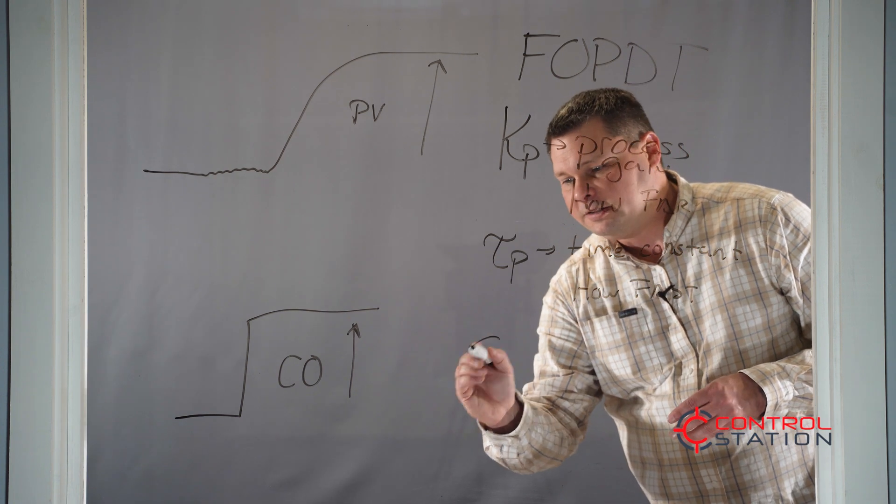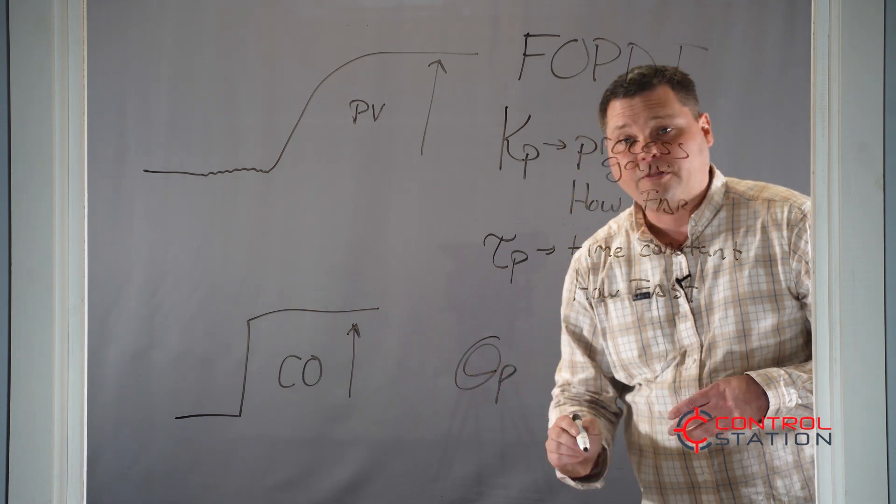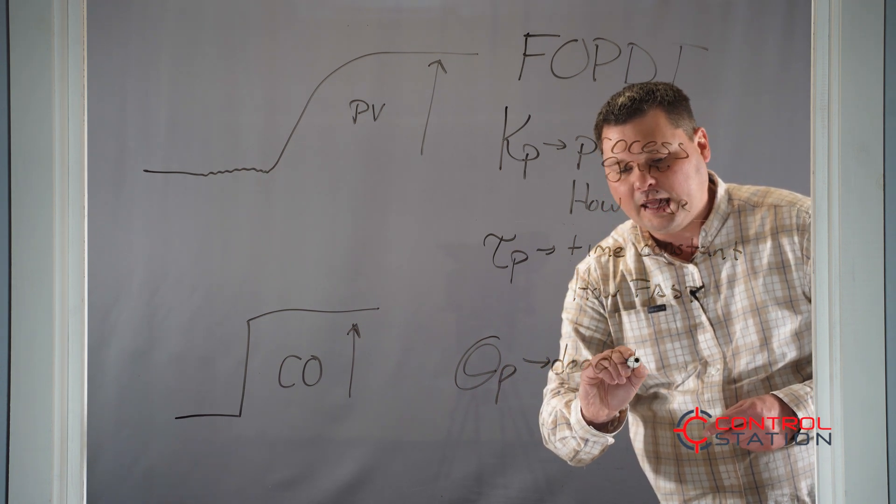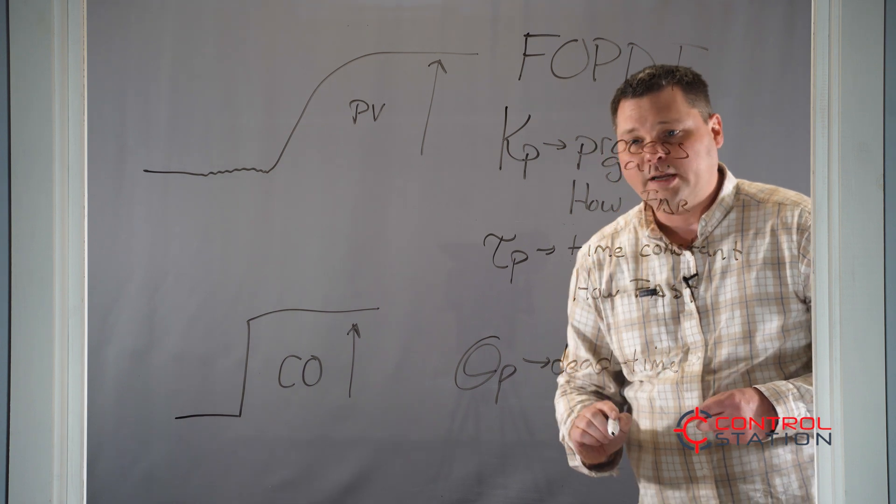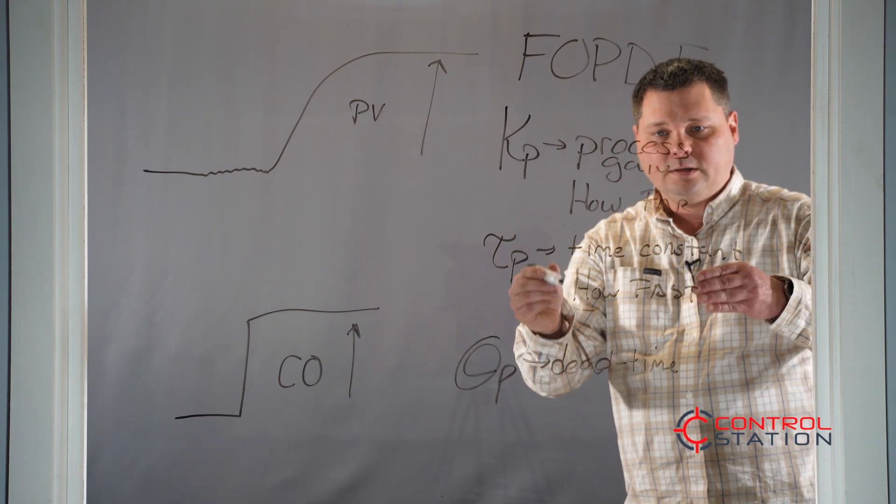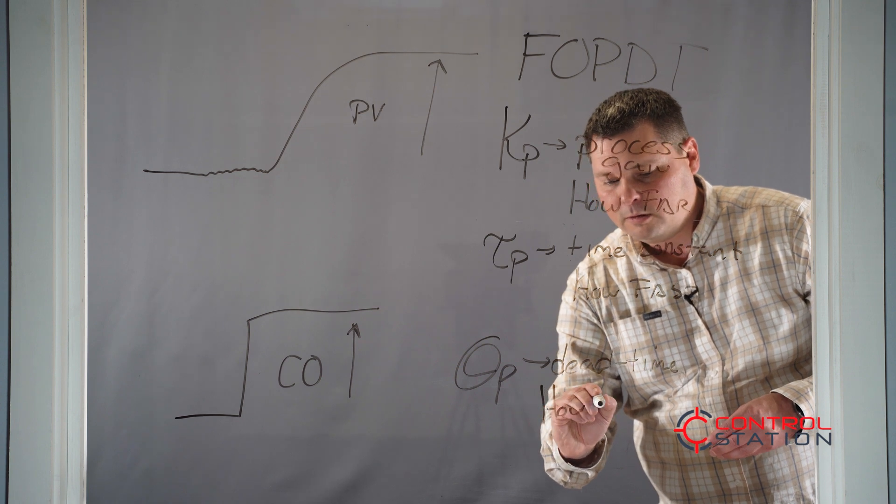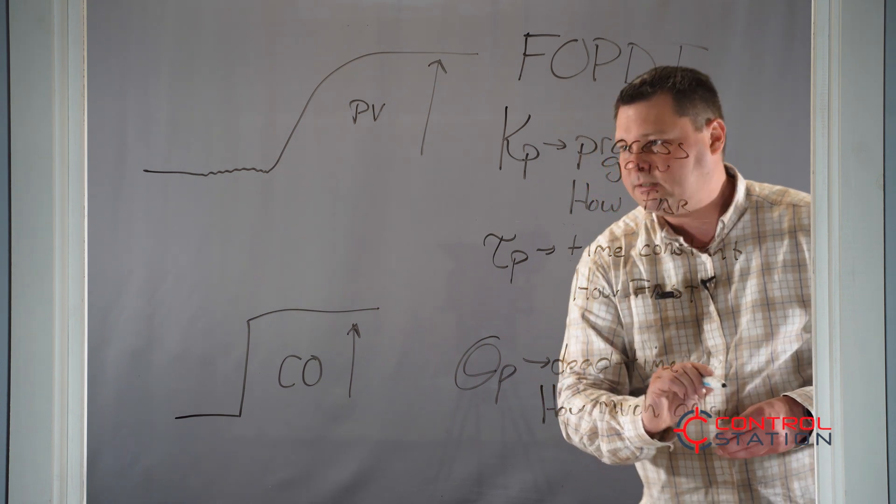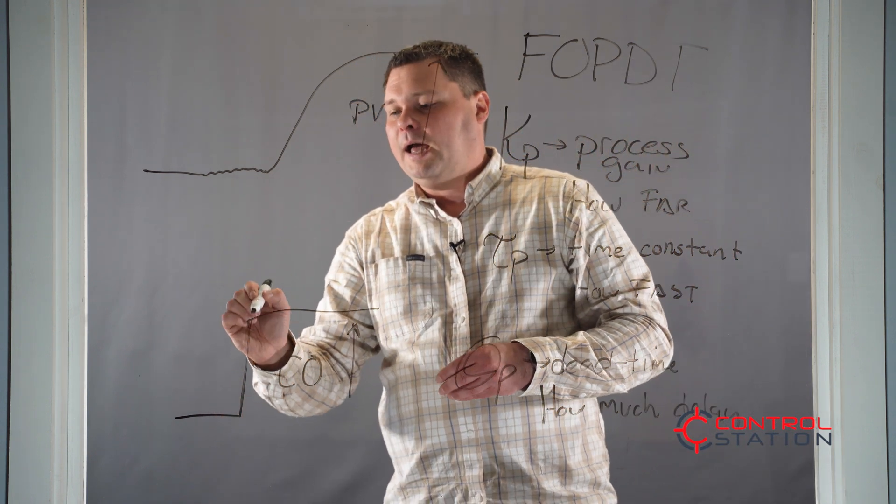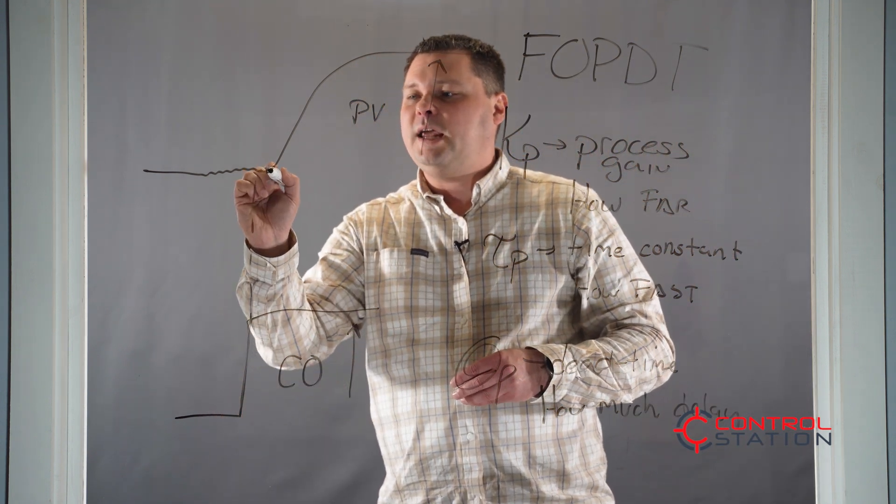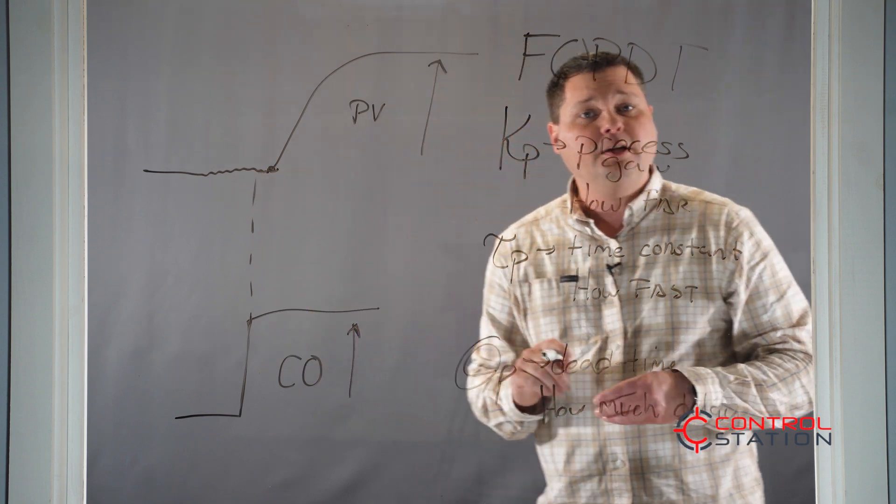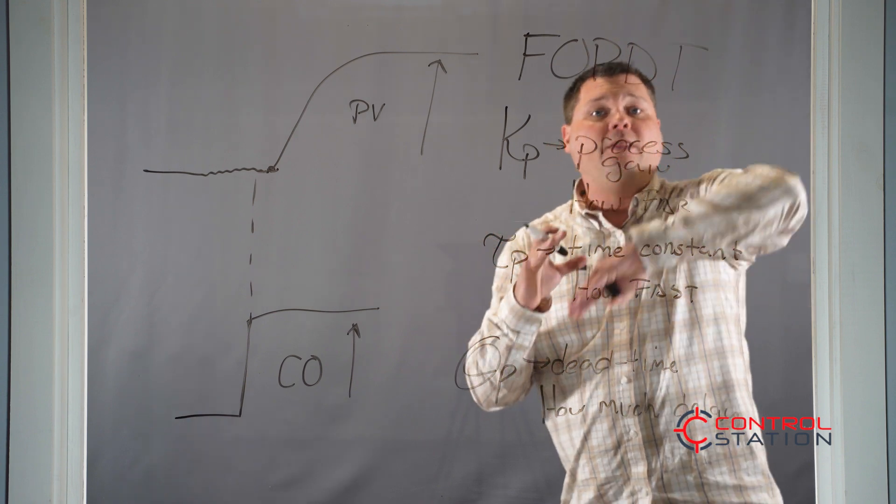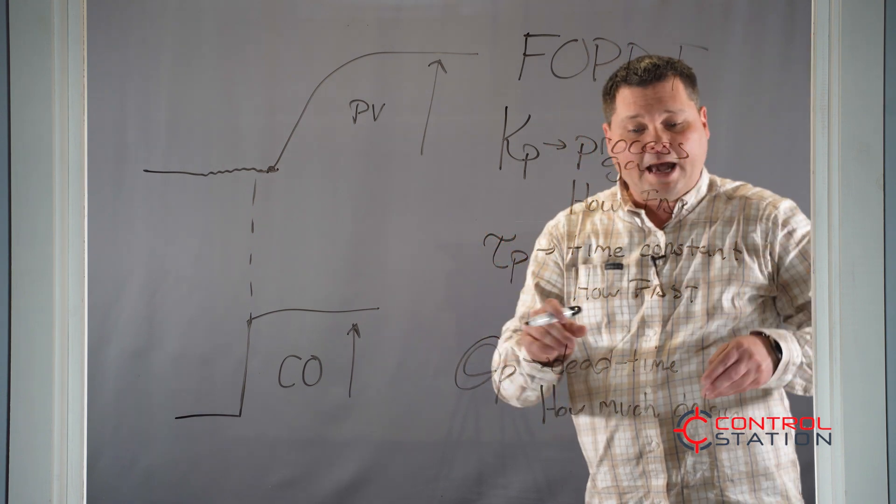The next parameter is our dead time or theta P. Our dead time is related to the delay of the system. So how fast, how far, how much delay. That's going to tell us when I make a change to my valve, how long does it take till something actually starts to happen? You open the control valve, nothing happened, nothing happened, then the flow responded, then the temperature responded. That's going to be delay.